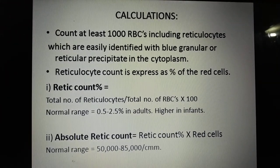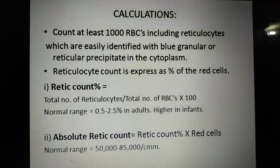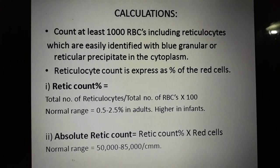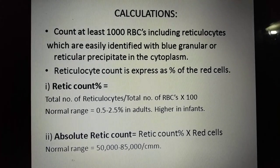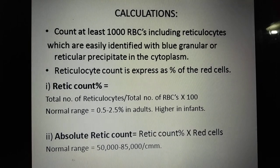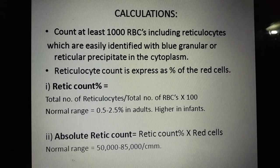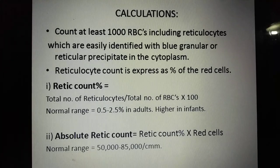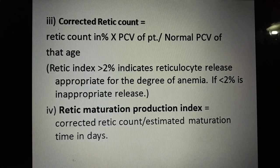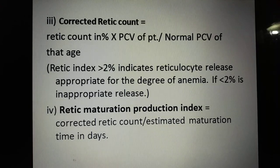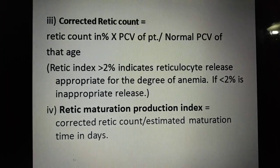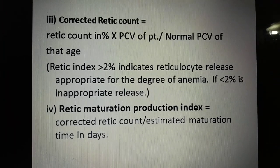The retic count percentage is calculated as: total number of reticulocytes divided by total number of RBCs, multiplied by 100. The normal range is 0.5 to 2.5% in adults, which is higher in infants. The absolute retic count is calculated as: retic count percentage multiplied by red cell count. Its normal range is 50,000 to 85,000 per cubic millimeter. The corrected retic count is calculated as: retic count percentage multiplied by the patient's PCV divided by the normal PCV for that age.